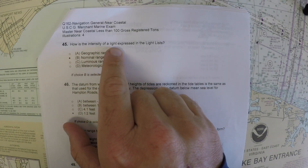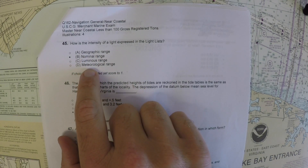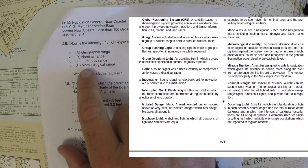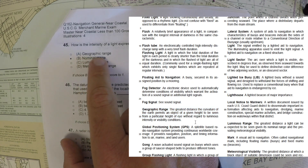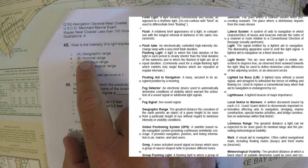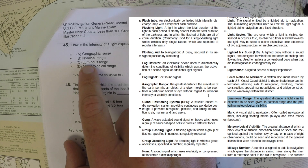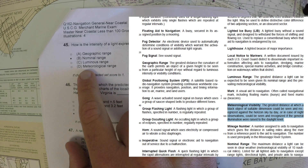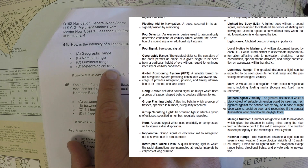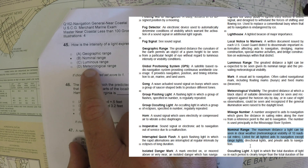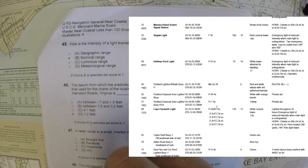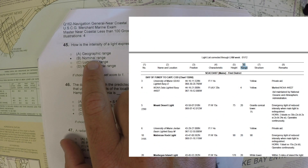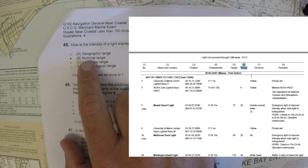For question number 45, how is the intensity of light expressed in the light lists? The correct answer is nominal range. Geographic range is essentially limited by the curvature of the Earth. Luminous range is a combination of nominal range and meteorological visibility — that's how far you could actually see a light. Meteorological range doesn't really exist; they may be trying to reference meteorological visibility. The intensity of the light itself is not how far you can see it. Nominal range, by definition, is the intensity of the light — how far you could see it on an average day. In the light lists, when they list 'range,' it is given as nominal range.